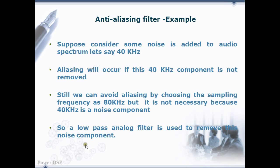So what is the obvious solution? Put one low-pass filter with a cut-off frequency of 20 kHz, and that will remove the component — in fact, all the components above 20 kHz. That's why we always introduce a low-pass anti-aliasing filter in any DSP system.